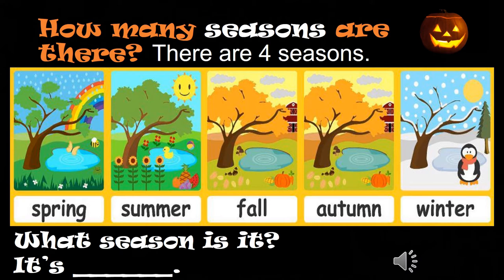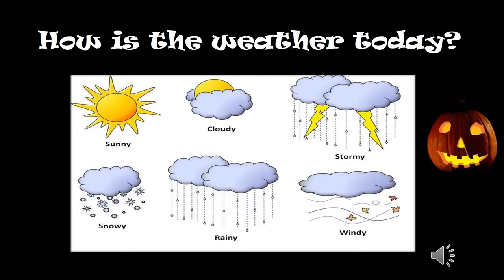Slide 10: go over the seasons. Ask 'how many seasons are there?' — they should say 'there are four seasons.' Then go over the seasons: spring, summer, fall/autumn, winter. Also ask 'what season is it?' — they should say 'it's fall' or 'it's autumn.' Slide 11: ask 'how is the weather today?' Go over weather patterns: sunny, cloudy, stormy, snowy, rainy, windy. Students should answer like 'it's sunny' or 'it's sunny and windy.'